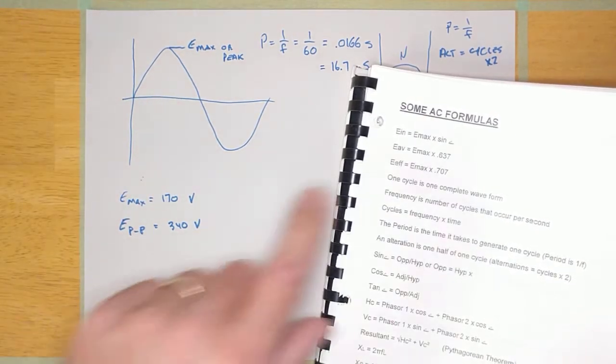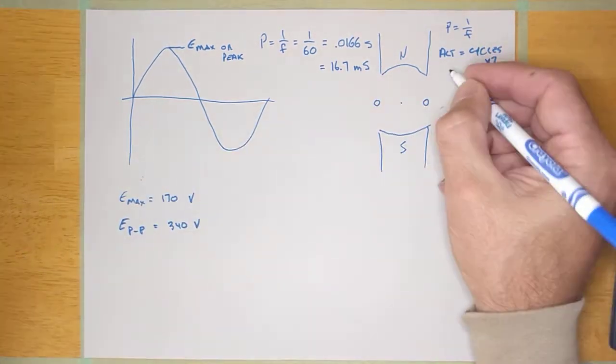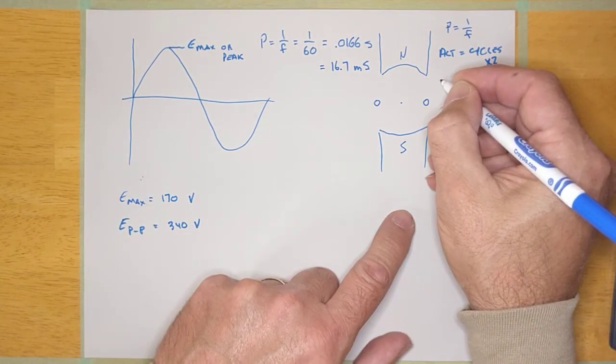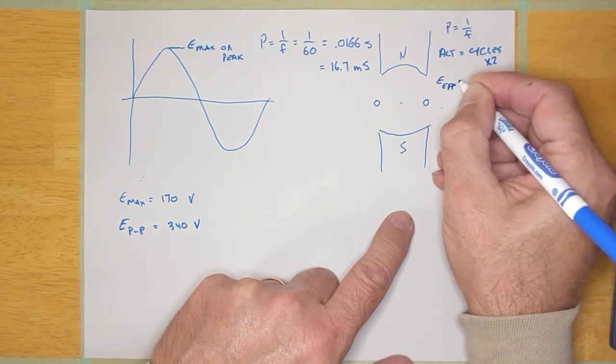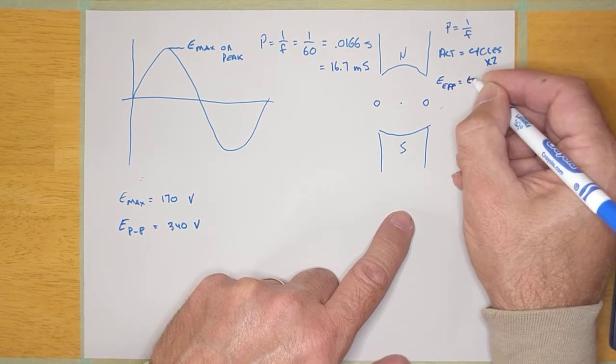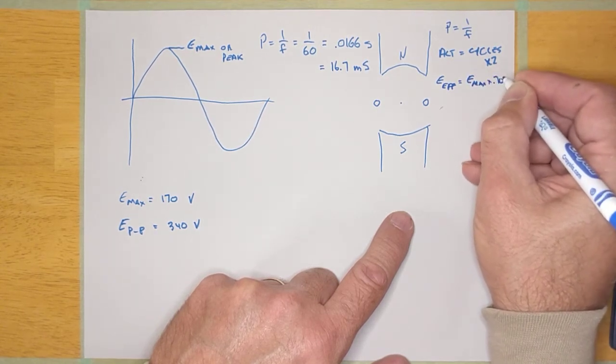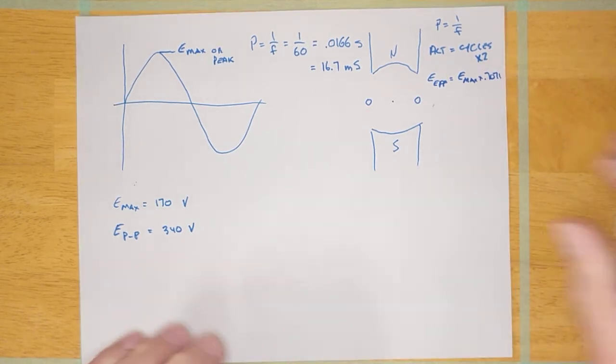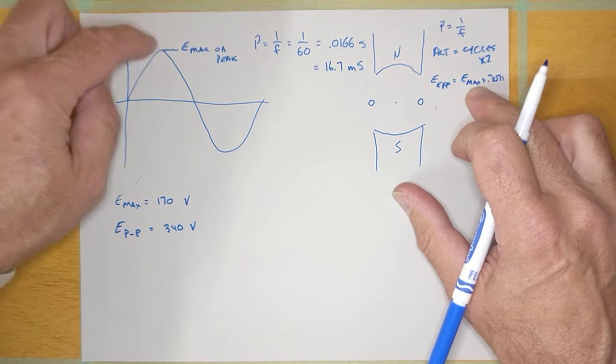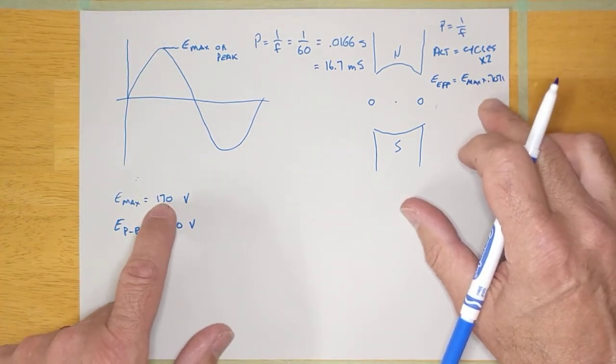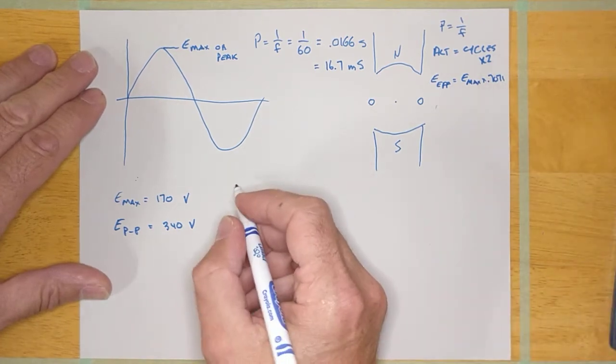Just remember the formula. I'm going to write it down right over here because it's a formula that we're going to use once in a while. E effective is equal to E max times 0.7071. And since that's true, I can calculate the AC voltage if I'm looking at this sine wave and I'm noticing that the voltage at the peak is 170 volts.